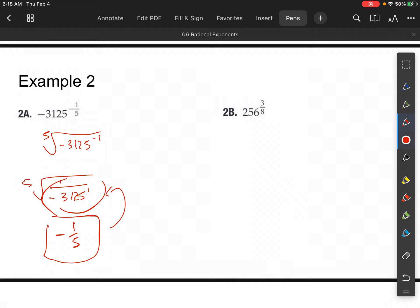For 2b, we have 256 to the 3 eighths. So let's write that. Let's just write that in radical form. This is the same thing as 256 to the third power, and then taking the eighth root of all of that.